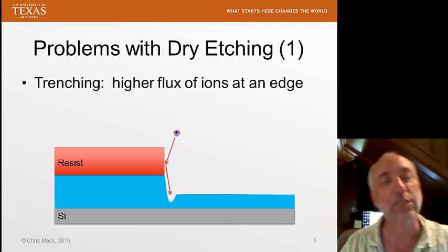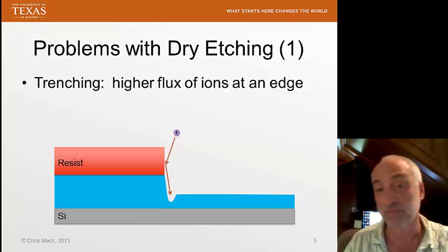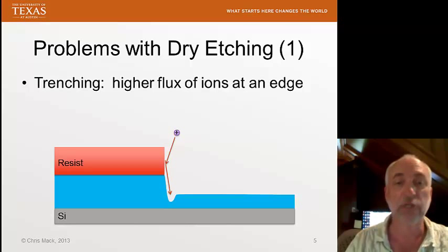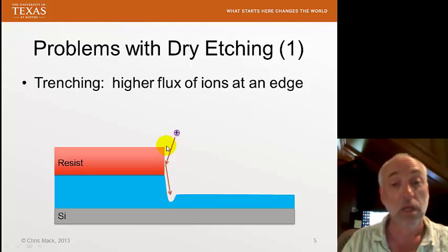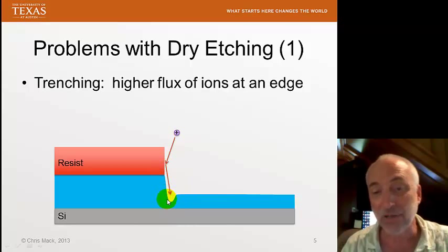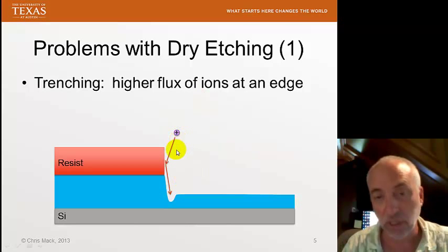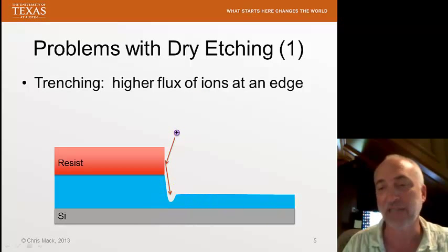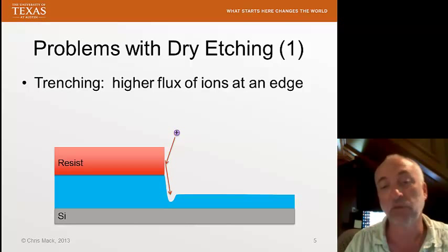There are a number of problems with dry etching. One is called trenching. If we're etching some region, occasionally ions will bounce off the sidewalls, resulting in a higher concentration of ions in a region right near the sidewall. Because most ions are moving essentially vertically but not exactly vertically, we get a higher ion flux near the sidewall. The result is a trench, which can be a problem especially if you don't have good selectivity with respect to the substrate or etch-stop layer.